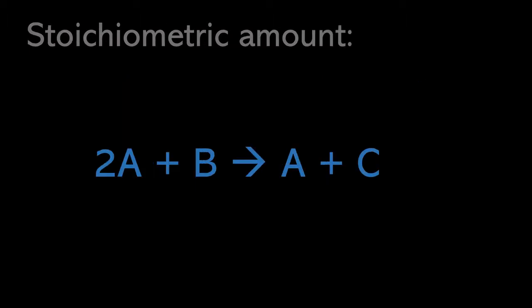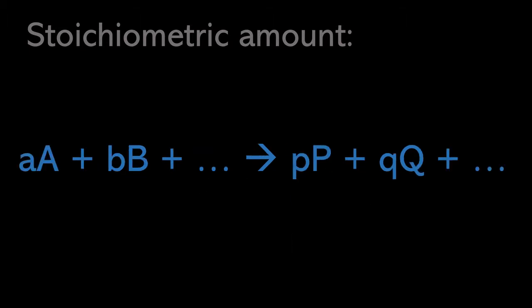The first term I want to go over is stoichiometric amount. This is the number of molecules of a given reactant or product species that participates in a biochemical reaction. So in this case the stoichiometric amount for reactant A would be 2, for reactant B would be 1, and for products A and C would both be 1. This can be represented in a general way where the stoichiometric amount is just a coefficient on the species name for the reactant and product species.